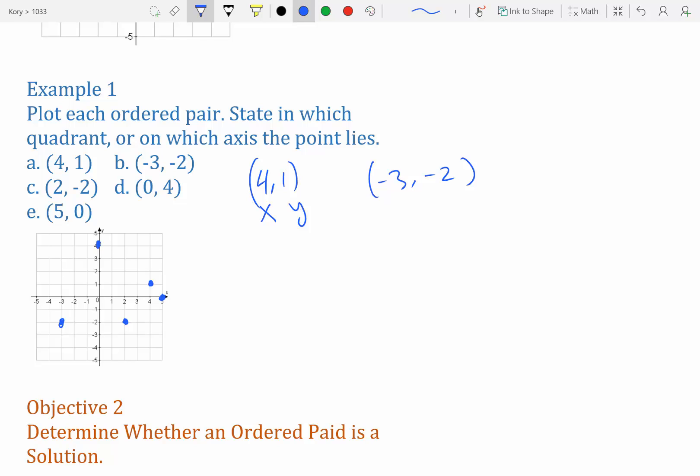Alright, I plotted all the points. Now let's determine what axis or quadrant each of these are in. So 4, 1 is right here. That's quadrant 1.